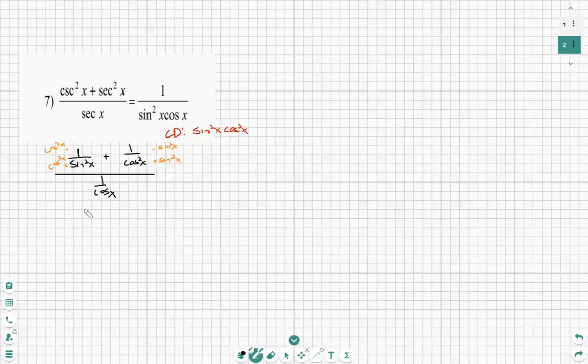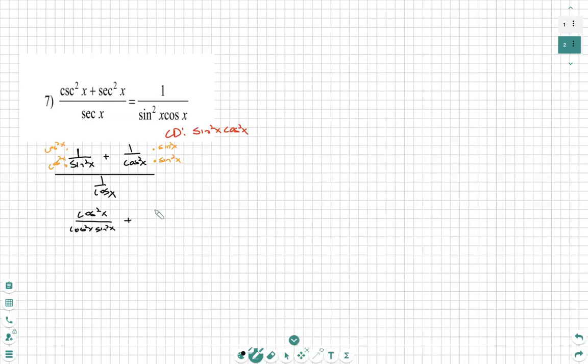So let's clean that up. We get cosine squared of x all over cosine squared of x sine squared of x, plus sine squared of x all over cosine squared of x sine squared of x.